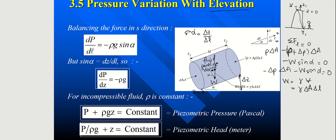So I replace everything into this equation. I get negative delta P delta A minus gamma delta A delta L delta Z over delta L equals to 0. So this can be cancelled, cancelled.